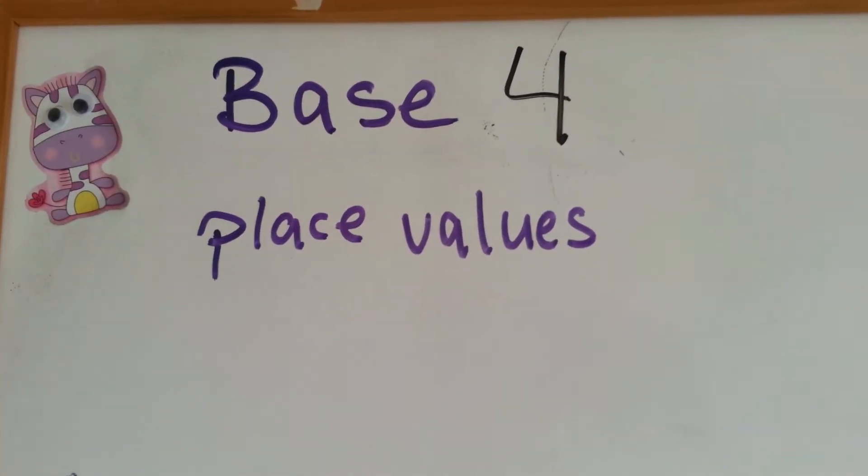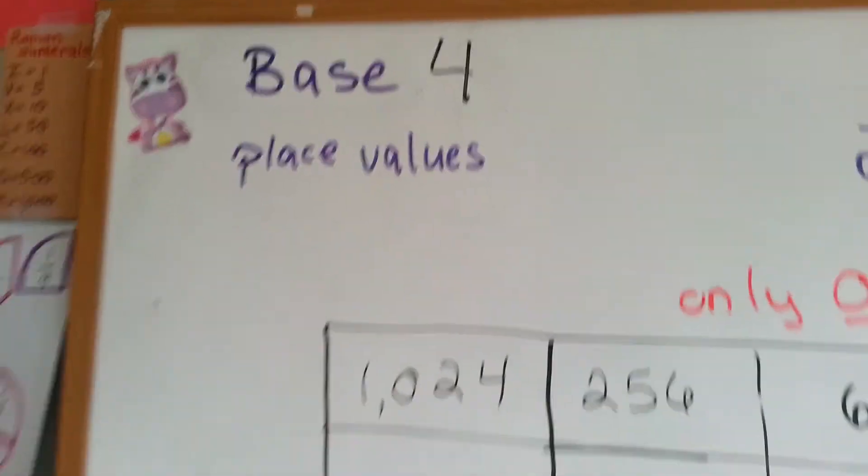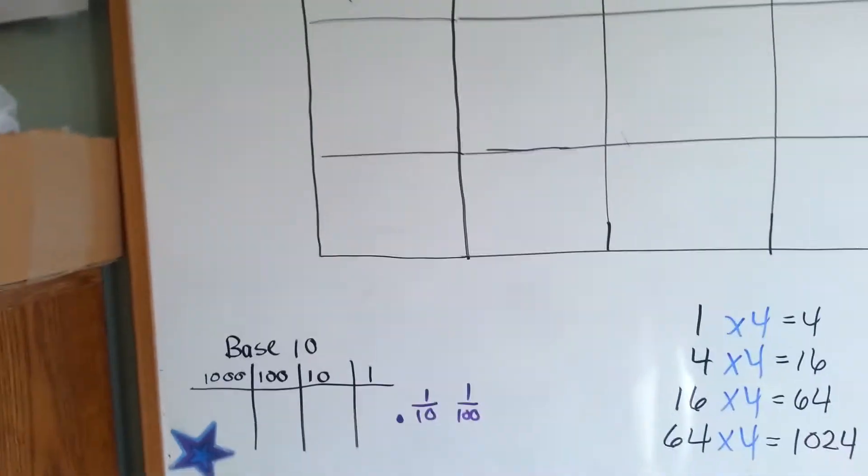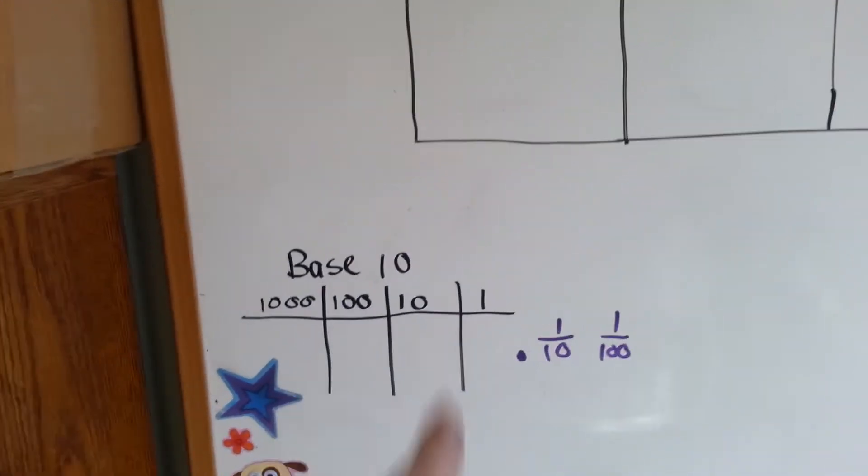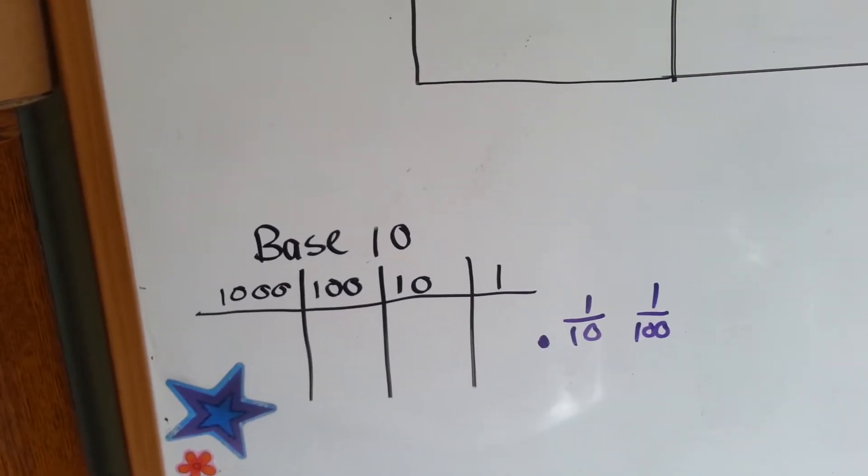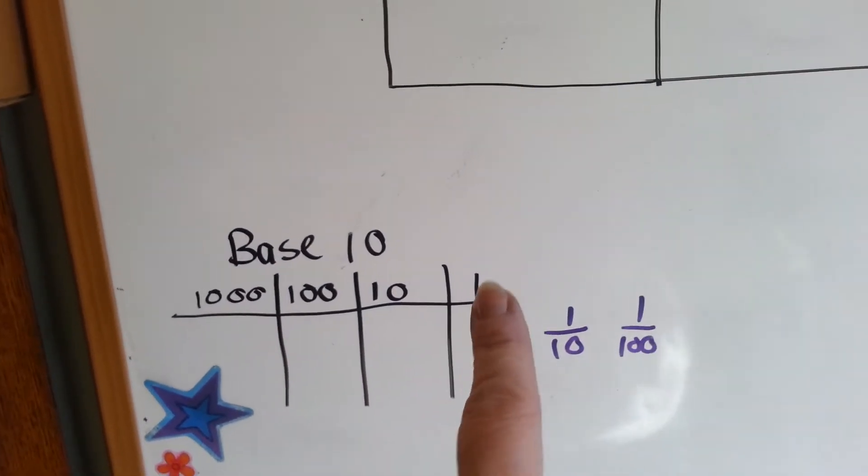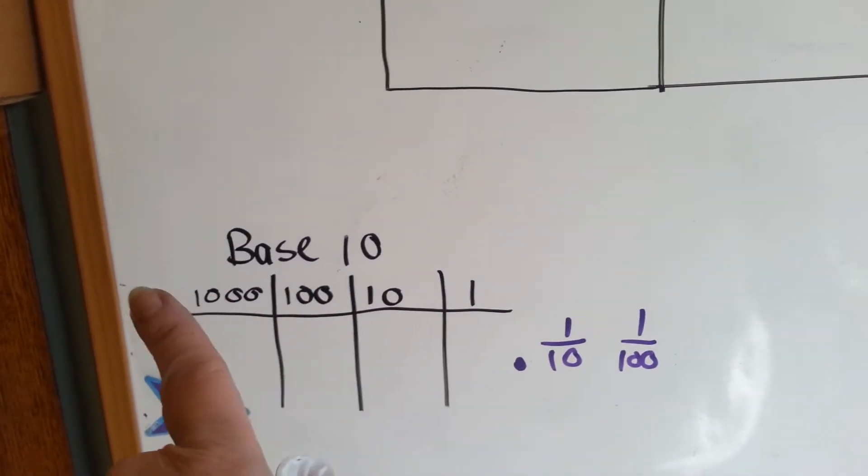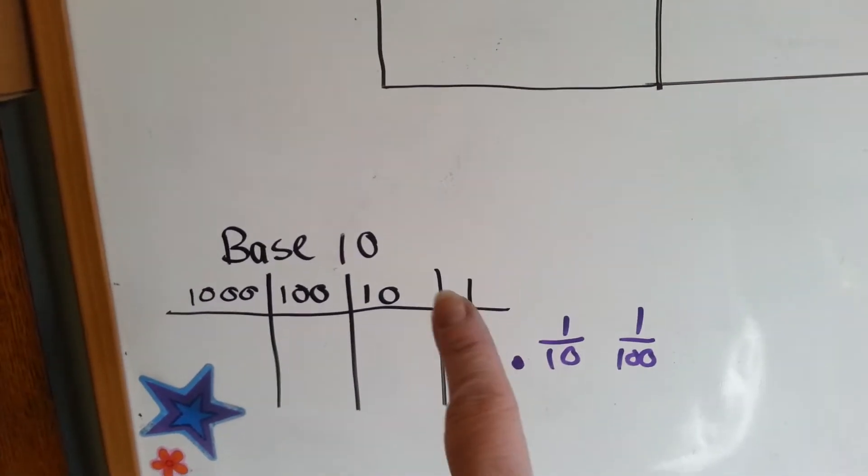Base four place values. We're doing base tables. In our normal everyday world, we work off of base ten. Base ten is every time you go to a place value to the left, you multiply it by ten.